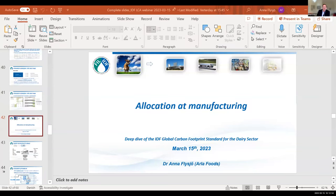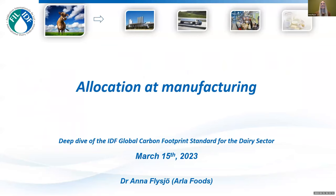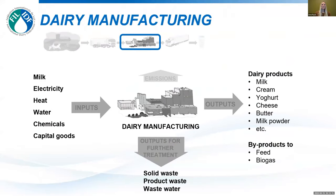Thank you so much, Greg. A few questions came into the chat. Now we're going to move up the value chain to dairy manufacturing and look at allocation there. Anna is the scientific lead on climate and environment at ISLA Foods and co-chair of this group, with a background in LCA. Anna will look at allocation at the dairy manufacturing level.